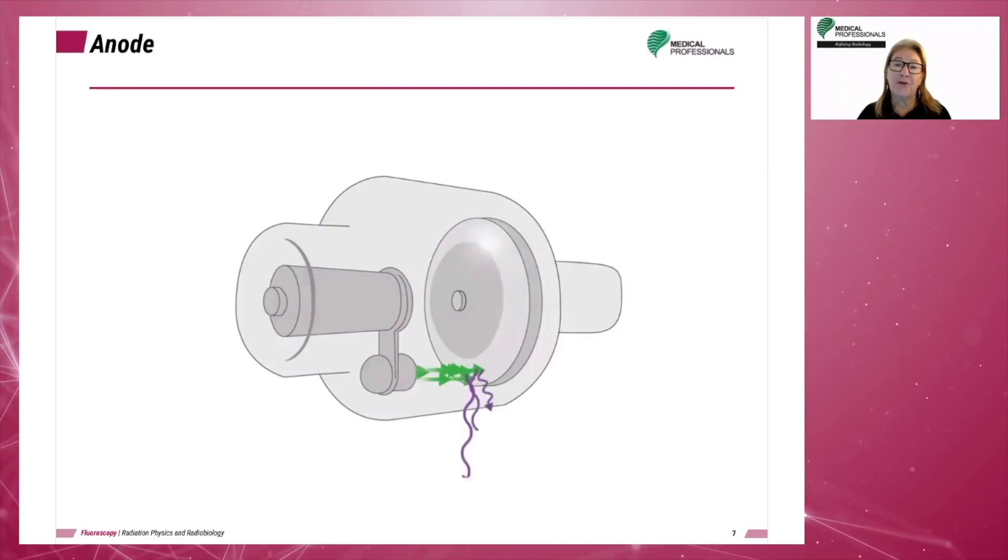Another thing happens when the rotor is engaged. The target at the anode begins to rotate at high speed, approximately 3,000 to 9,000 revolutions per minute by mechanical induction. The target at the anode is made of tungsten, which has a high melting point and a high atomic number.